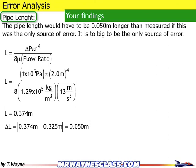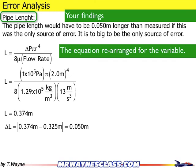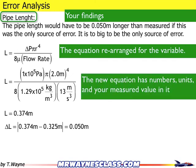The pipe length would have to be 0.05 meters longer than measured if it was the only source of error. So that's my title up there, topic sentence. And then I'd have all the supporting materials. So I've got the equation rearranged for the variable, the equation with the numbers and units and your measured value in there, and then this new value that I calculated.